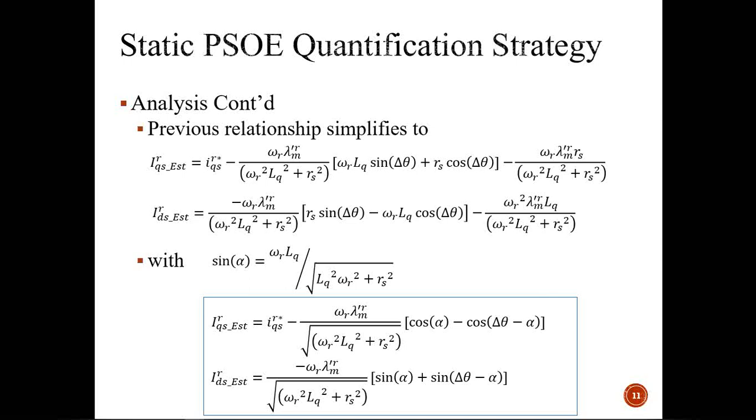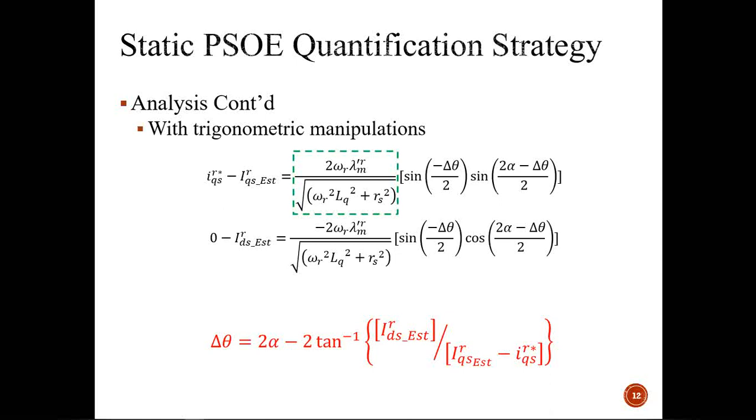Once we substitute those voltages into an inverse machine model, we obtained these equations shown in the blue box. You have your estimated i_q and estimated i_d based on the measured voltages, and there's a cosine and sine relationship. To extract that relationship, we looked at the error generated by calculating the true i_q or reference i_q subtracted by the estimated i_q. There's an interesting relationship: your amplitude of that error will vary as a function of speed as well as motor parameters.